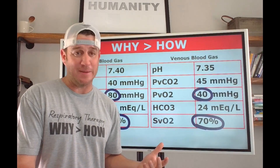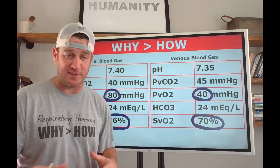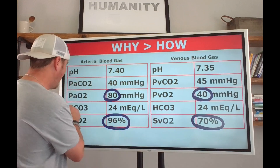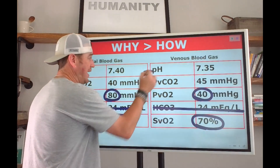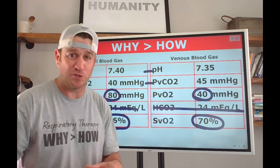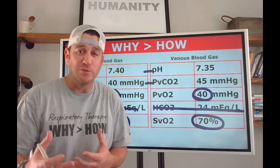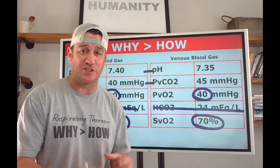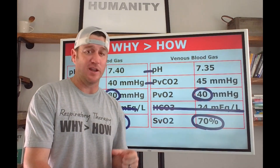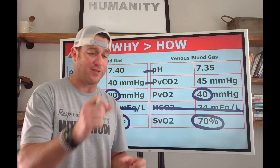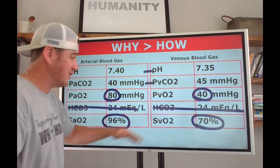Bicarb should be relatively equal between arterial and venous blood, so bicarb doesn't help you in this differentiation process. CO2 and pH make sense physiologically, but there are no reliable tools to use CO2 and pH alone to definitively say 'this is venous.' What we can use to tell arterial from venous are your oxygenation values.